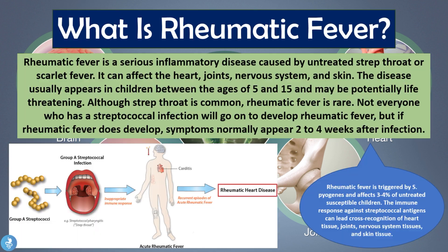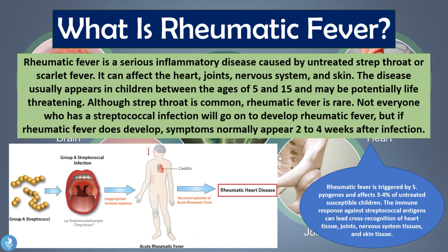So what is rheumatic fever? Rheumatic fever is a serious inflammatory disease caused by an untreated strep throat infection or scarlet fever infection. It can affect the heart, joints, nervous system, and skin, and usually appears in children between the ages of 5 and 15, and may be potentially life-threatening. Although strep throat is common, rheumatic fever is rare — not everyone with a streptococcal throat infection will develop it, but if it does develop, symptoms normally appear around two to four weeks after infection.